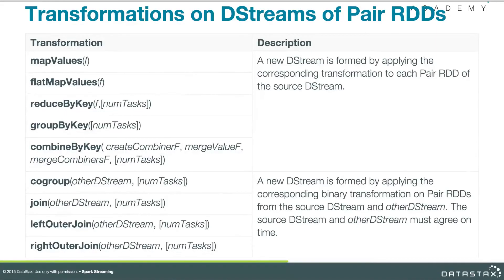If you have D-Streams of pair RDDs, the APIs for transforming these look very much like the pair RDD transformations in conventional Spark. We have map values, flat map values, reduce by key, group by key, combine by key — all of those same APIs we have from before — and also co-group, join, left outer join, and right outer join.